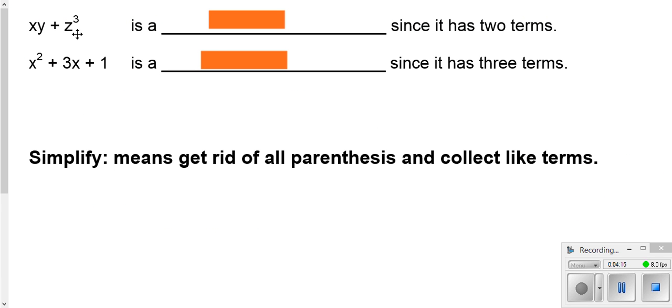So, this is a special polynomial. We have two terms. We call that a binomial. If we only had one term, we would call that a monomial. If you have three terms, you would call that a trinomial.